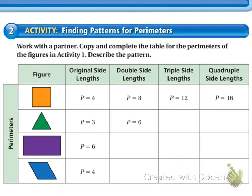Let's look at some examples. We have a square, a triangle, a rectangle, and a rhombus. If the perimeter of a square is 4, each side length is 1. Doubling the side lengths gives a perimeter of 8, tripling gives 12. For the triangle with original perimeter 3, doubling the side lengths gives a perimeter of 6, and tripling gives 9.